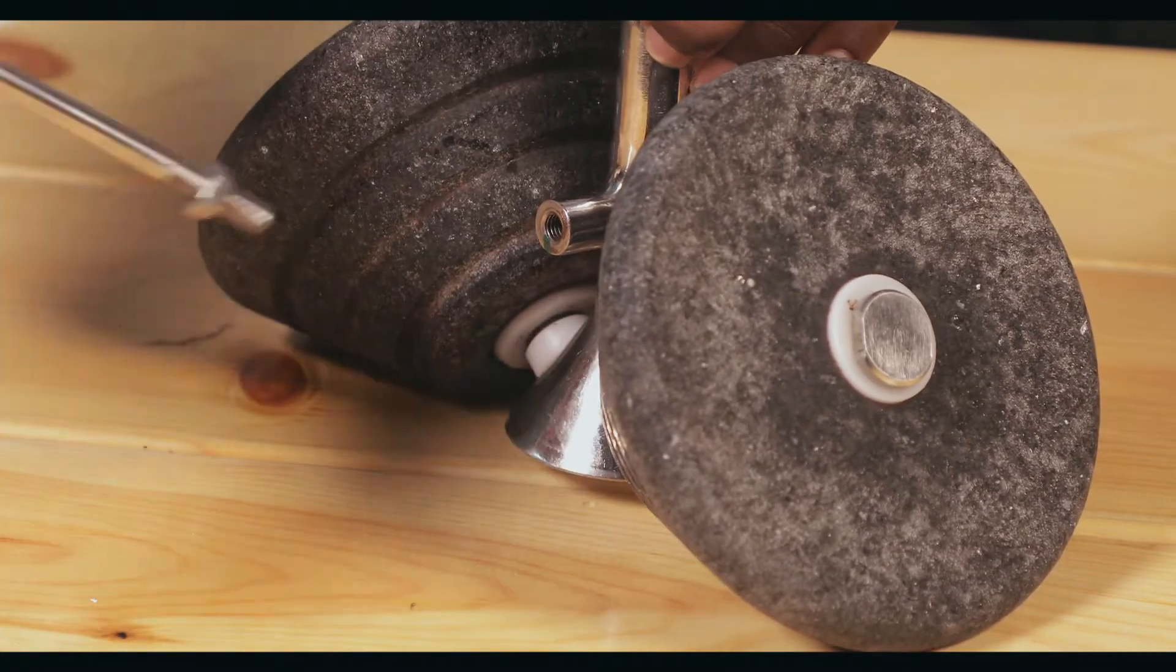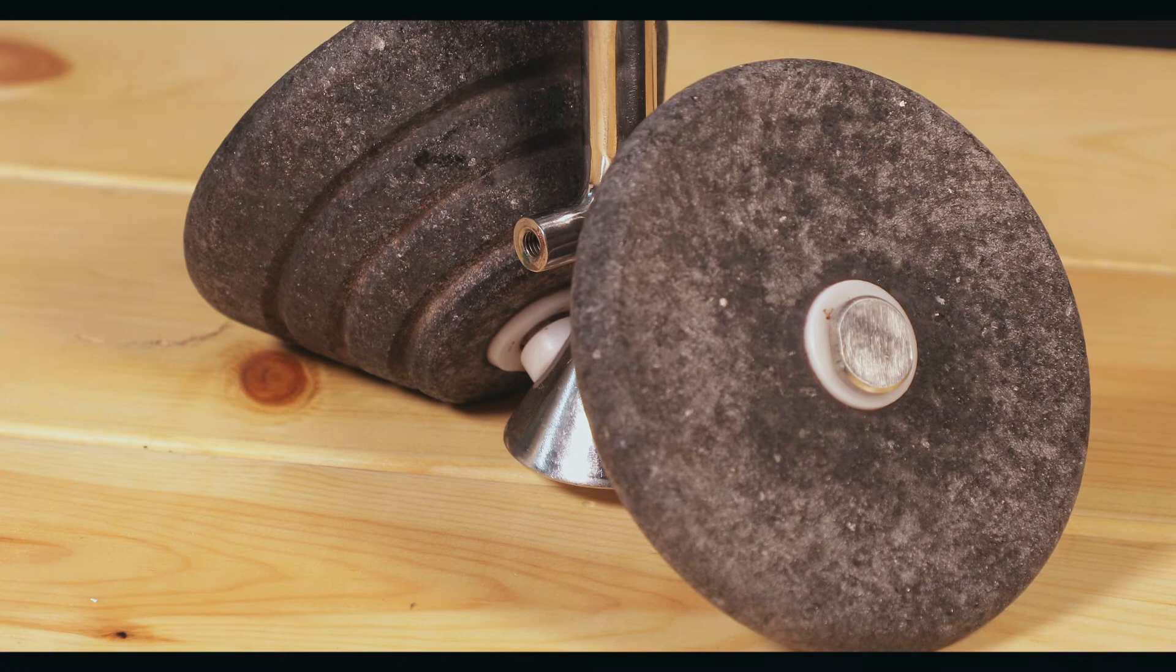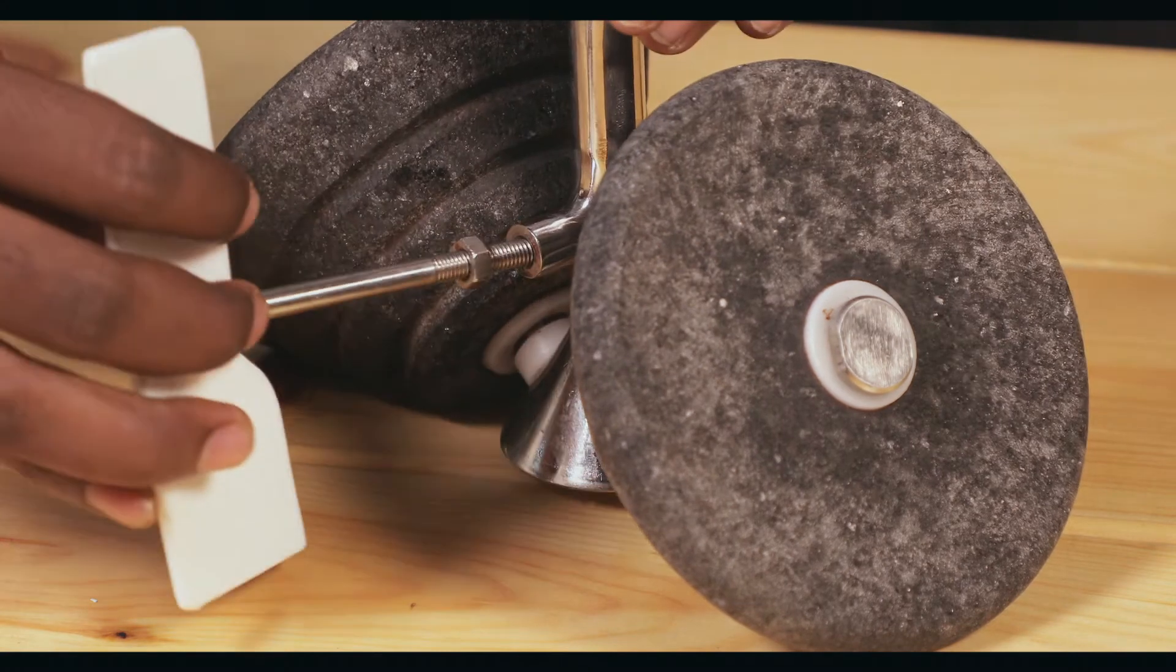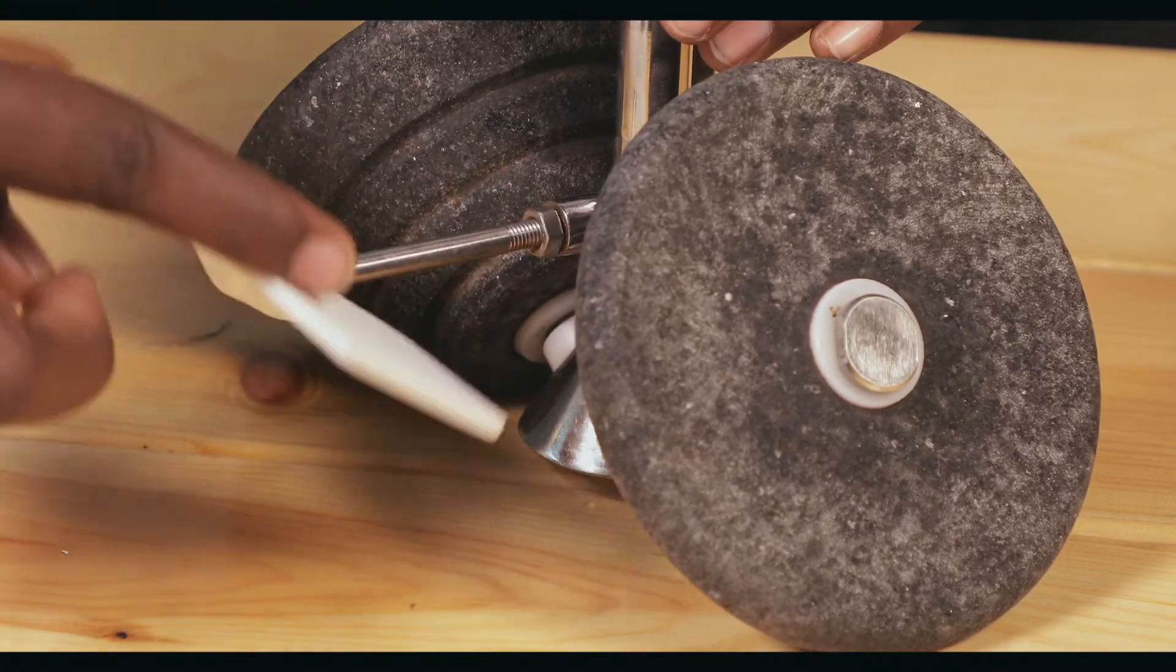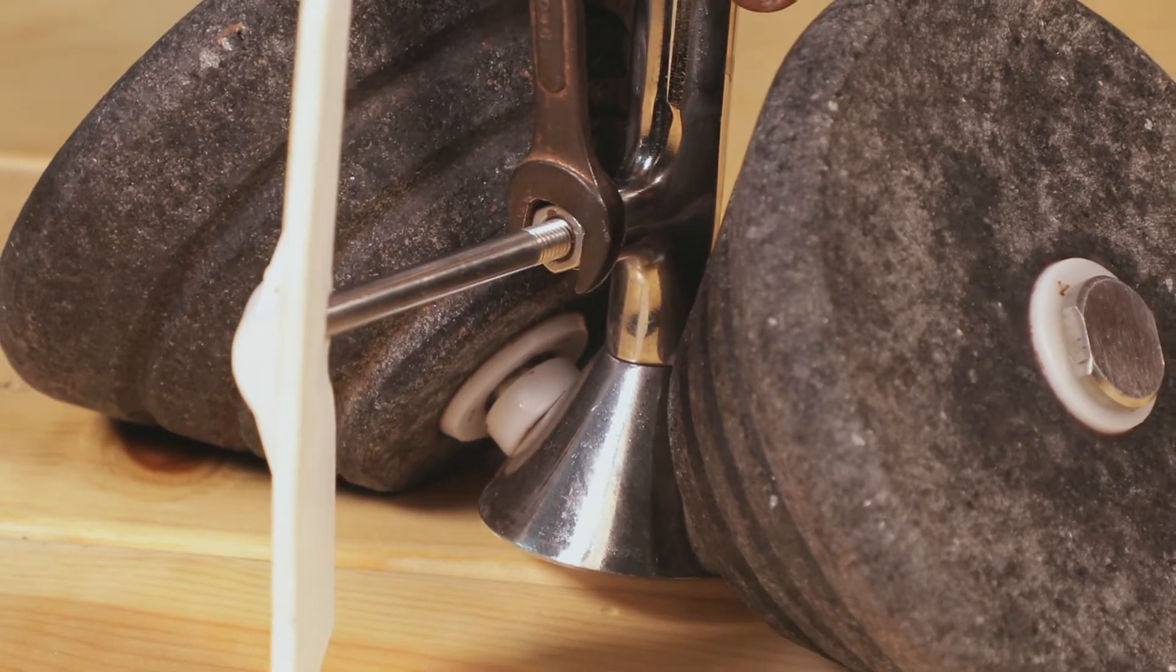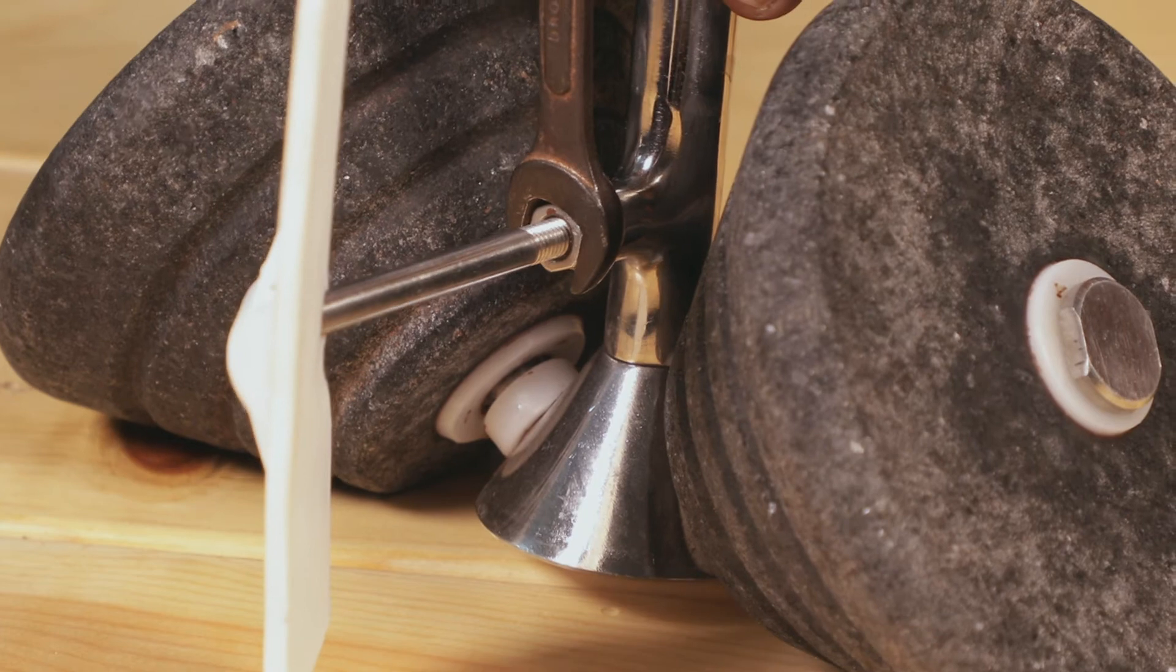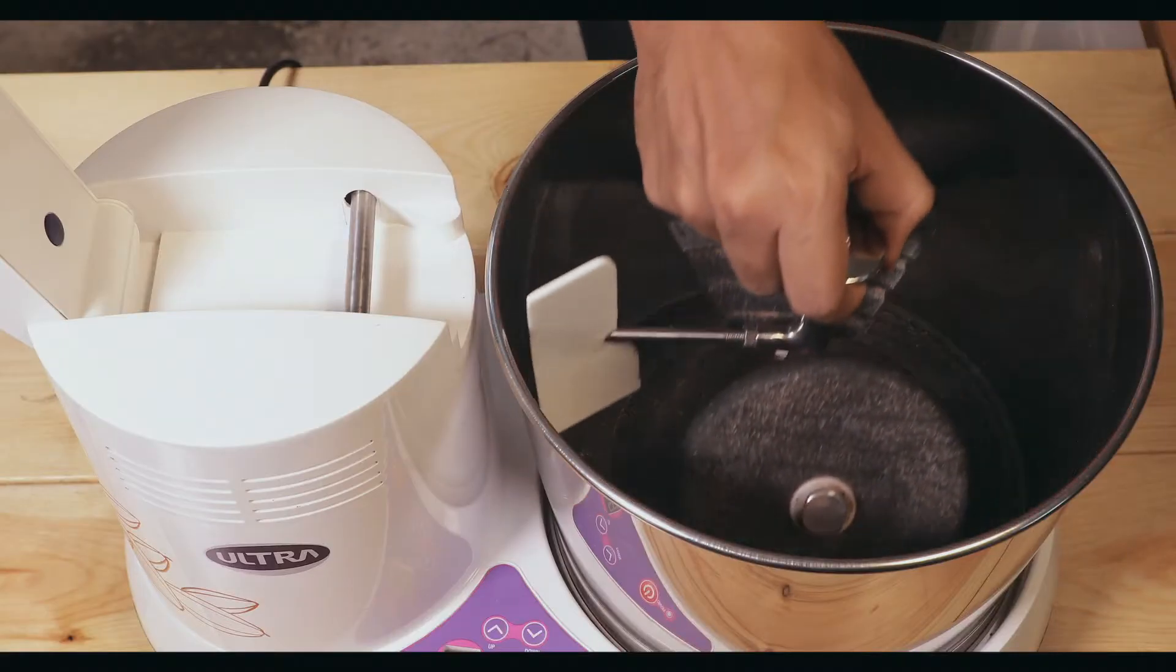Unthread it from the roller stone assembly. Now secure the new wiper in its place as shown and rotate it in a clockwise direction. Use a spanner to tighten the nut in the clockwise direction.